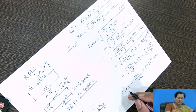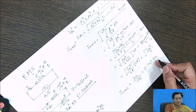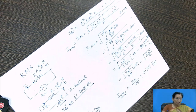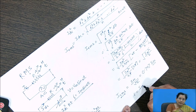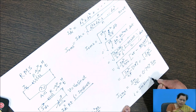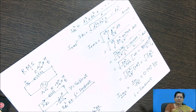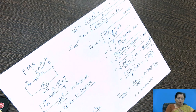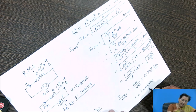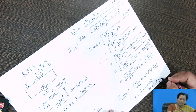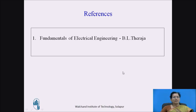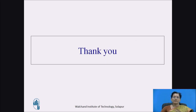This is the relation between I_RMS and maximum value. If we know the mathematical equation I = Im sin(ωt), we can calculate the RMS value from it. You can refer to the book Fundamentals of Electrical Engineering by B.L. Thareja. Thank you.